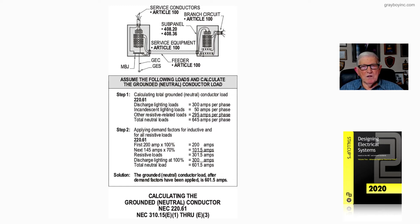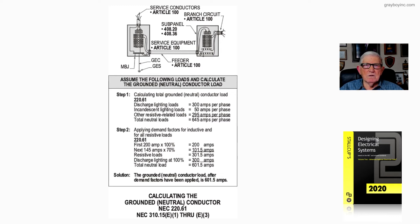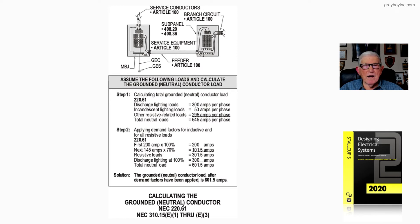When you go to 220.61, you separate the loads. Do you have inductive loads, harmonics, non-linear loads, or incandescent loads? If you have any of those loads, you divide them into the amount of amps or VA that you would have.